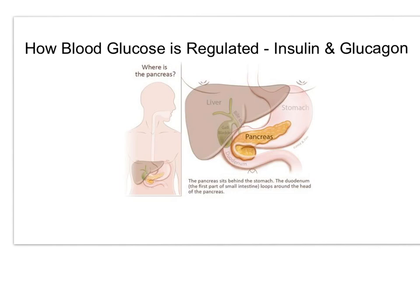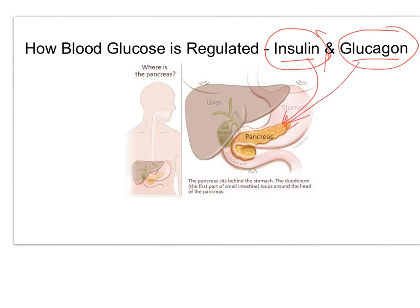Hi guys, this is Mrs. Foy, and this is a screencast on the endocrine system to talk about how blood glucose is regulated. There are actually two hormones that have to do with how your blood sugar is regulated: insulin and glucagon. Both of these are hormones produced in the pancreas, which sits kind of behind the stomach.